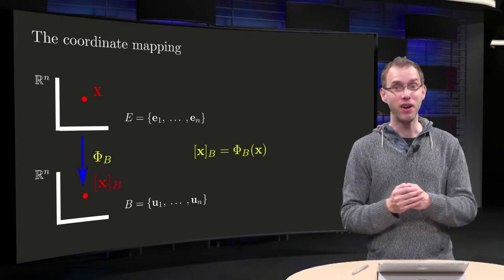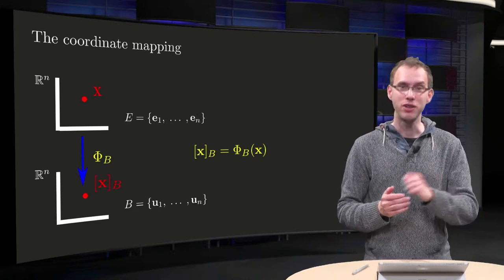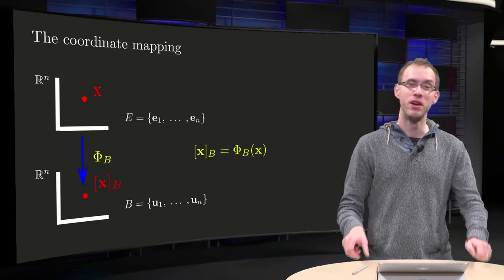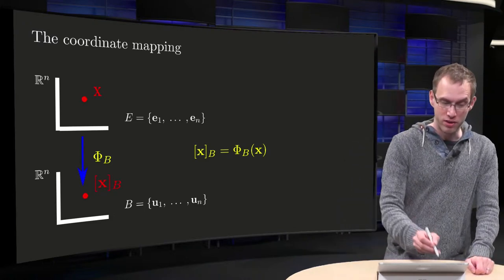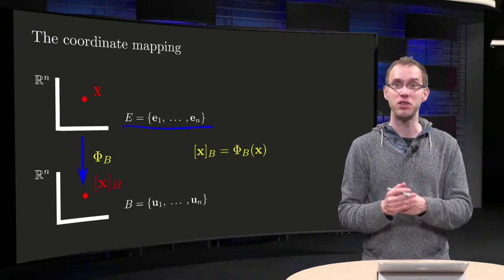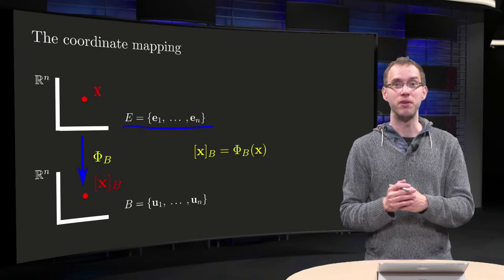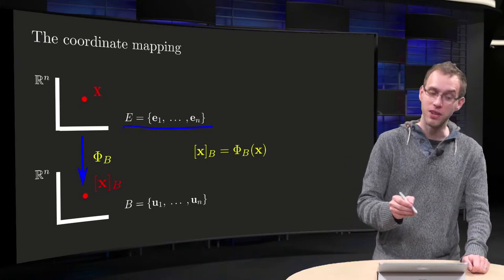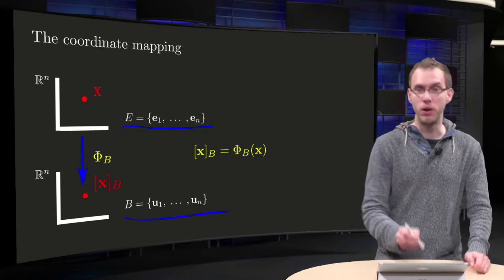But how can we find this matrix Pb? That is what you will learn in this video. So what do we have? We have Rn with our standard basis E, E1 up to En, the standard basis vectors, and we also have Rn with a different basis B, U1 up to Un.